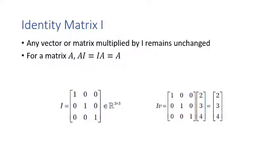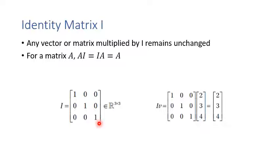The identity matrix I is like the number 1 for real numbers — any vector or matrix multiplied by I remains unchanged: A × I = I × A = A. The identity matrix is a diagonal matrix where all diagonal entries equal one. For example, a 3×3 identity matrix multiplied by vector [2,3,4] returns [2,3,4].